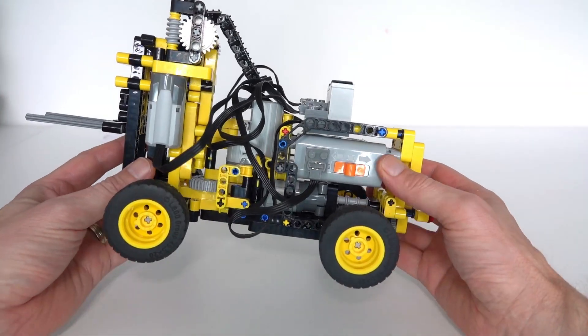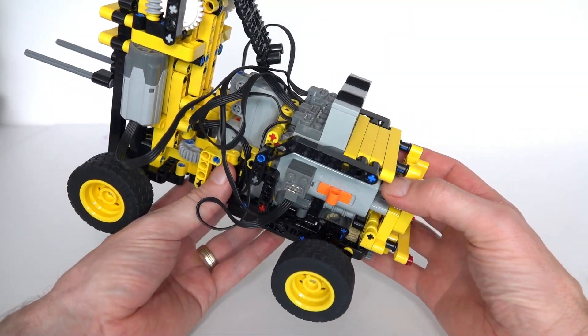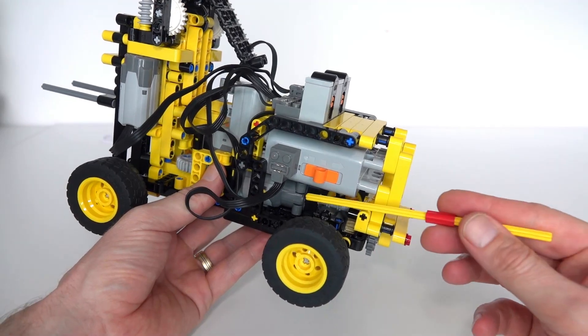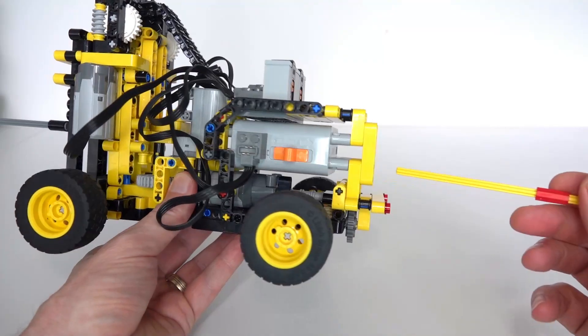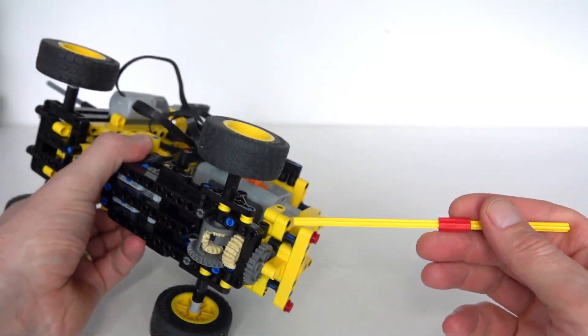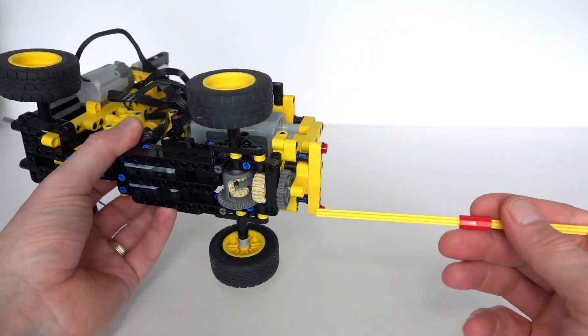Okay, so that was the steering mechanism and I'll tell you about the actual driving of the forklift. That's been implemented using a large power functions motor. So that motor is embedded here, goes through this axle which then connects onto a three to one gearing ratio.